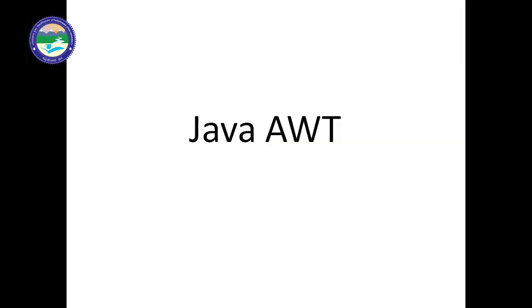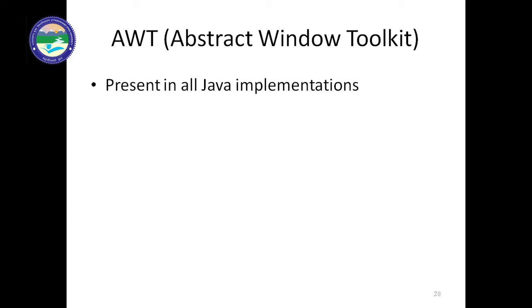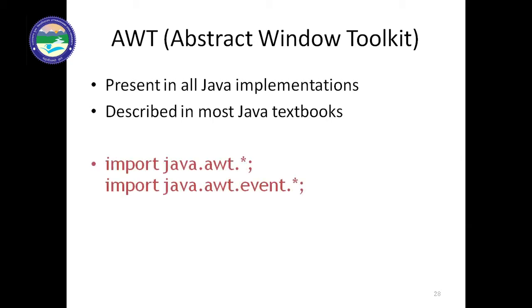Today I will discuss Java AWT. Both AWT and Java Swing are used for designing Java forms — this is GUI building. AWT is present in all Java implementations and is described in most Java textbooks. To use Java AWT, we write 'import java.awt.*' and 'import java.awt.event.*' — both packages are required.